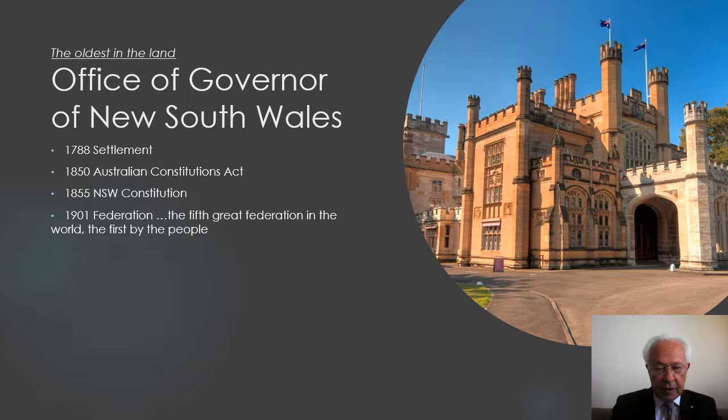The next step in our development was in 1926, when in London, at a meeting of the Prime Ministers of the Dominions, it was decided that the Dominions — each of them, Australia, Canada, South Africa — should become independent within the British Commonwealth.